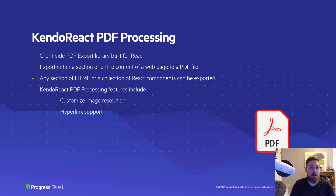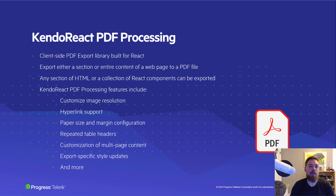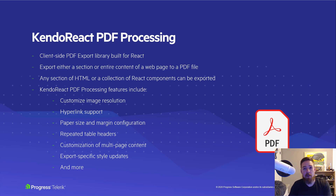Some of the features available within Kendo React PDF Processing include customizing the image resolution of images you're exporting, including hyperlinks within exported documents, working with different paper sizes, customizing content and styling right before exporting so the exported content can have a different look and feel, or adding items like your company logo and repeating headers over multiple exported pages. With all that being said, let's jump straight into some code.